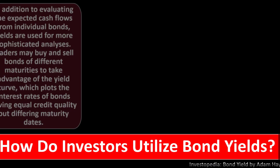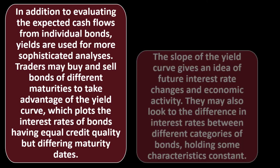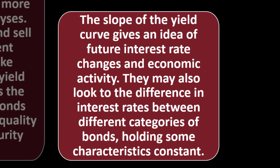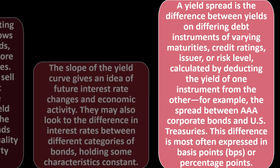How do investors utilize bond yields? In addition to evaluating expected cash flows from individual bonds, yields are used for more sophisticated analysis. Traders may buy and sell bonds of different maturities to take advantage of the yield curve, which plots interest rates of bonds having equal credit quality but differing maturity dates. The slope of the yield curve gives an idea of future interest rate changes and economic activity. A yield spread is the difference between yields on differing debt instruments of varying maturities, credit ratings, issuer, or risk level — for example, the spread between AAA corporate bonds and U.S. Treasuries — most often expressed in basis points (BPS) or percentage points.